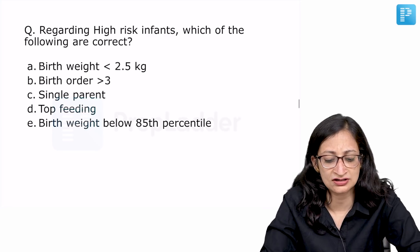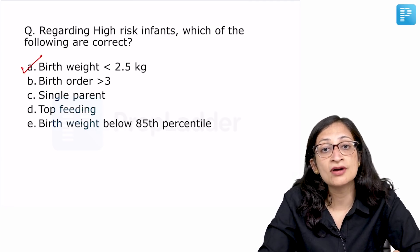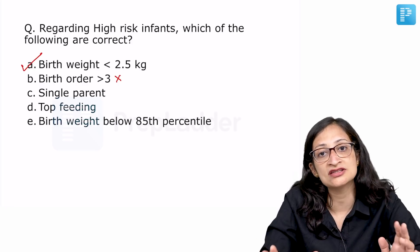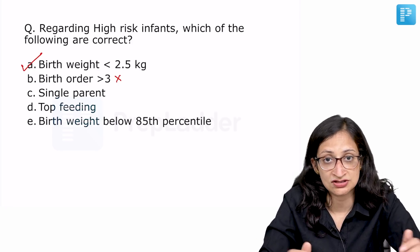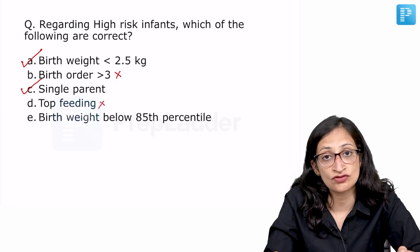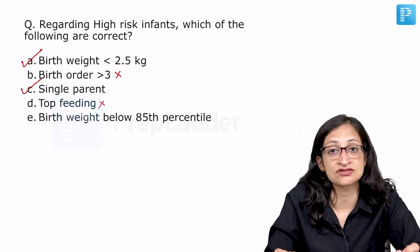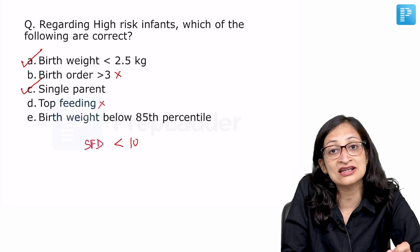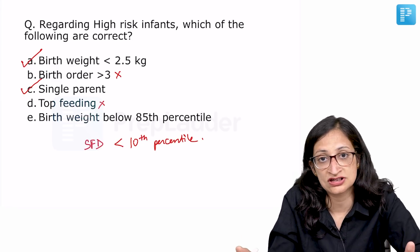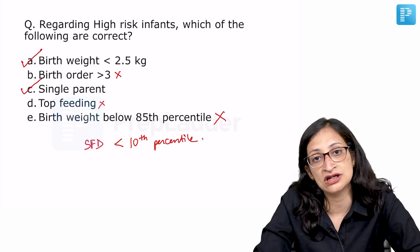Going back to the question options: birth weight less than 2.5 kg — yes, that makes a baby high risk. Birth order more than 3 — the latest Nelson edition does not specify birth order as a risk factor, but short inter-pregnancy intervals is a confirmed risk factor. Single parent — yes, an unmarried or single-parent status is a risk factor. Top feeding — not mentioned among risk factors. Birth weight below 85th percentile — small-for-date is defined as below the 10th percentile, so 85th percentile is not a risk factor.